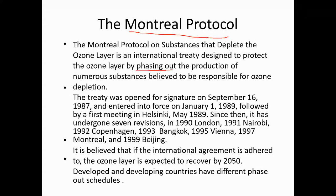As per the Montreal Protocol, we have to phase out all these substances — not in a single day, but subsequently, step by step. First, we identify the substances, then we decrease production, and then stop production entirely. This treaty was signed in 1987 but came into effect from 1989.